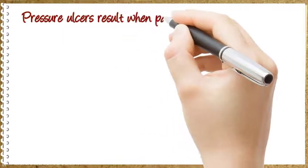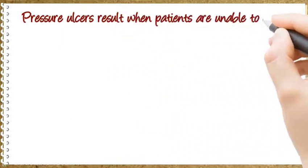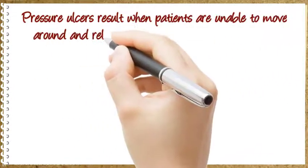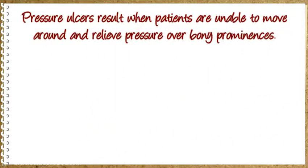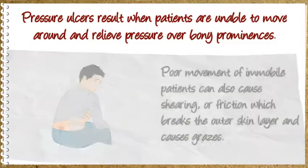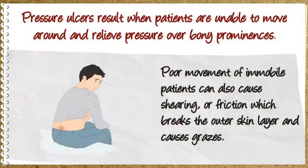Pressure ulcers result when patients are unable to move around and relieve pressure over bony prominences. Poor movement of immobile patients can also cause shearing or friction, which breaks the outer skin layer and causes grazes.